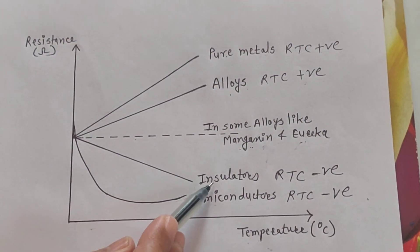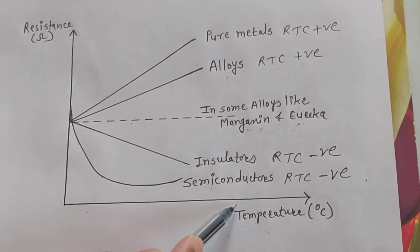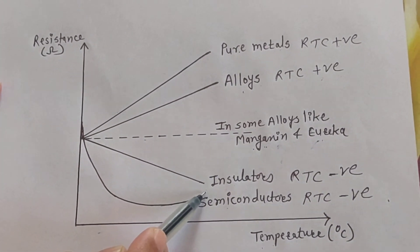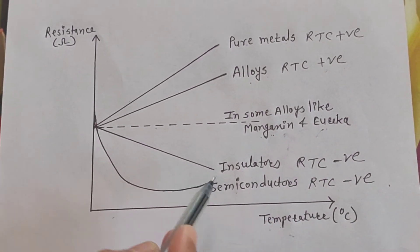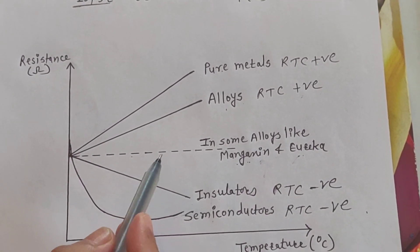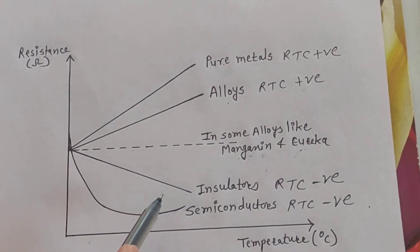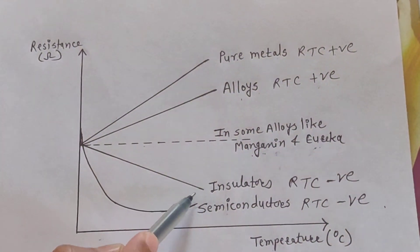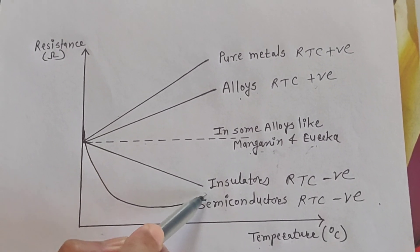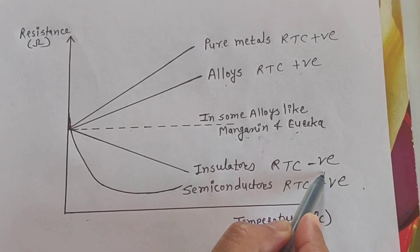The third material is insulator. An insulator is a bad conductor of electricity. As seen in the graph, as temperature increases, resistance goes on decreasing. This is because as temperature increases, electrons acquire energy and start conducting, so conductivity increases and resistance decreases. Therefore, RTC is negative for insulators.